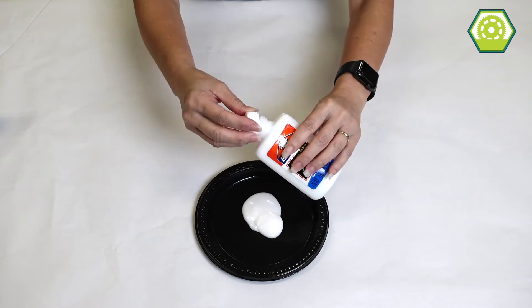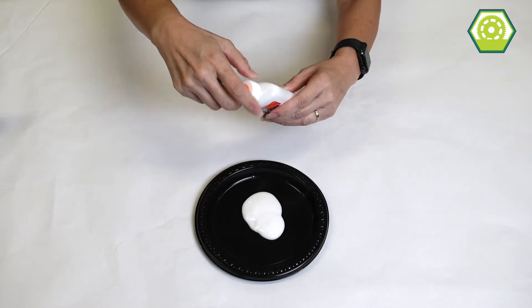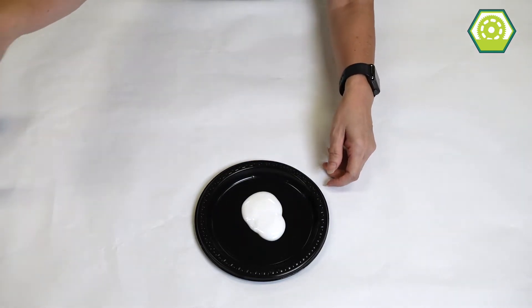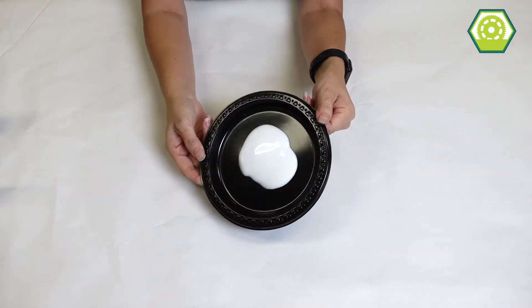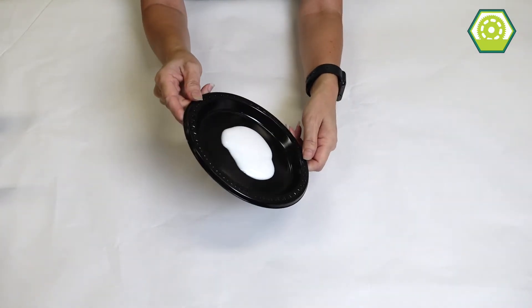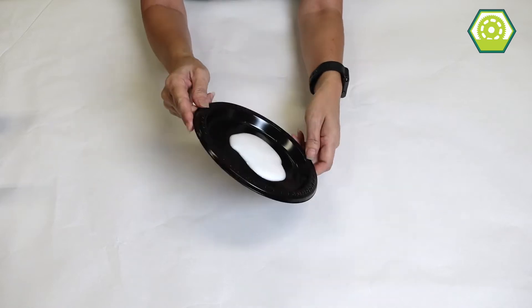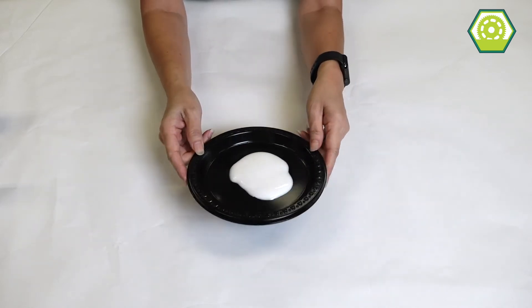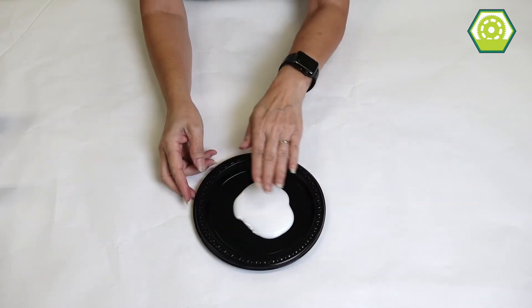Whoops, might have squeezed a little bit too much but it's okay. All right so now it's just a little glob, right? We're just gonna spread the glue out just a little bit. We don't want a glob in the middle. Okay I think we're good. That seems to be a little flat.